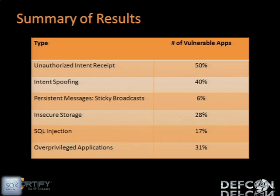The question is: what happened to insecure network communication? Unfortunately we don't have a good set of data for that. We talked about the two examples we've seen and thought it was important to mention them, but we don't actually have the data because it's not easy to detect these things with static analysis tools, which is what we've been using.